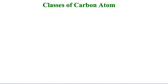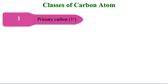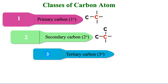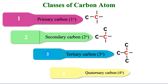Now let's look at the classes of carbon atoms. The first one is primary carbon — a carbon atom attached to only one other carbon atom. Secondary carbon is a carbon atom attached to two other carbon atoms. Tertiary carbon is a carbon atom attached to three other carbon atoms. And quaternary carbon is a carbon atom attached to four other carbon atoms.